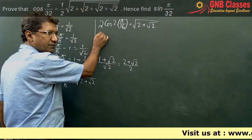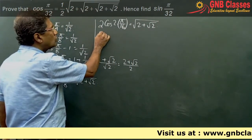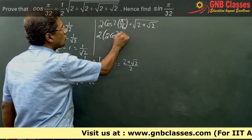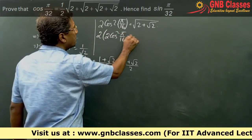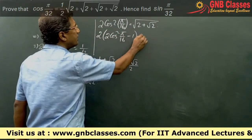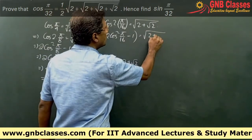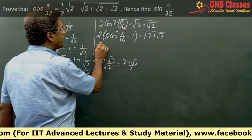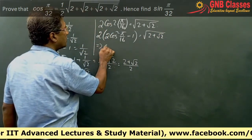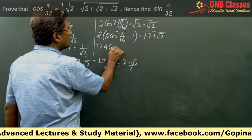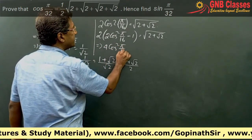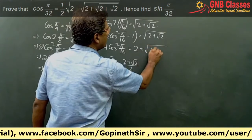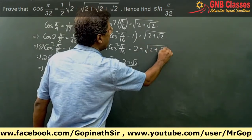This can be written again using the double angle formula: 2cos²(π/16) − 1 = √(2 + √2). So we get 4cos²(π/16) = 2 + √(2 + √2).